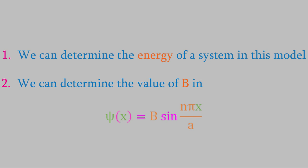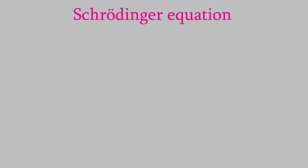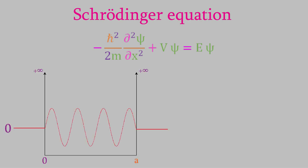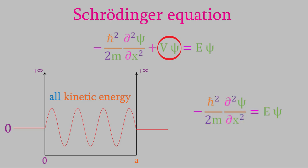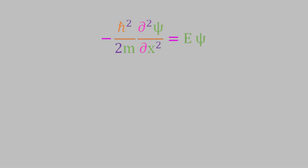So first, let's talk about the energy of the system. You might recall from video 5 that the energy of a system is given by the Schrödinger equation. Now in our model, the system is confined to the inside of the box, where the potential energy is equal to zero. In the Schrödinger equation, the potential energy is given by the second term. So since the potential energy is zero, we can drop that term out. That leaves us with this. Let's rewrite this a little — first we can move E·psi to the left side of the equation. Now let's get the term with the second derivative by itself by dividing by negative h-bar squared over 2m, which gives us this.